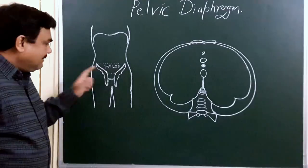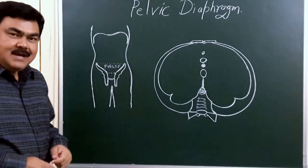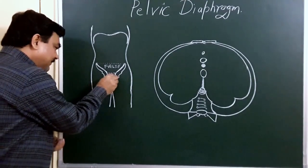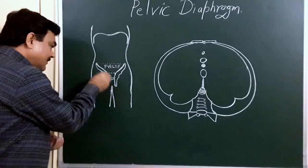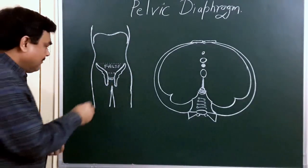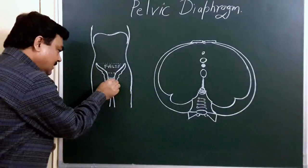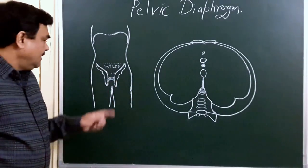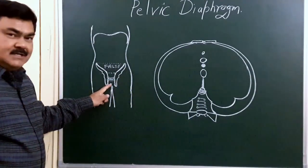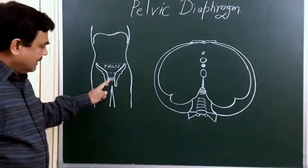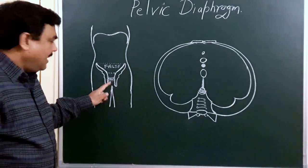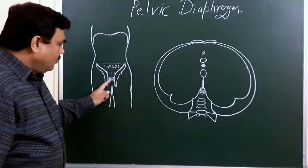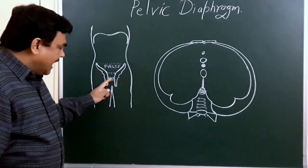This pelvic diaphragm is superiorly covered by a fascia known as pelvic fascia, and it is inferiorly covered by a fascia as well. Below this pelvic diaphragm is the perineum.